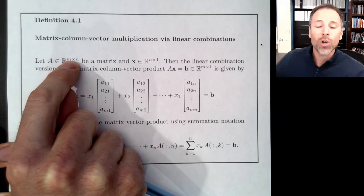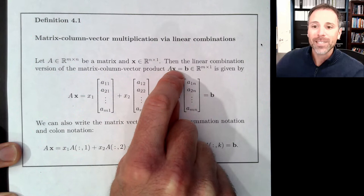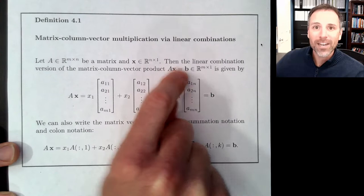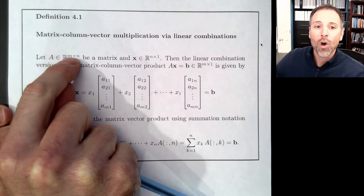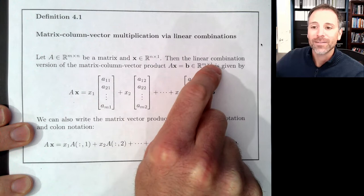Let's think about this: A is m by n, x is n by 1. The inner dimensions must agree — those inner n dimensions cancel out. What we're left with is the row number m and the column number 1 from x. So the outer dimensions define the size of the product.